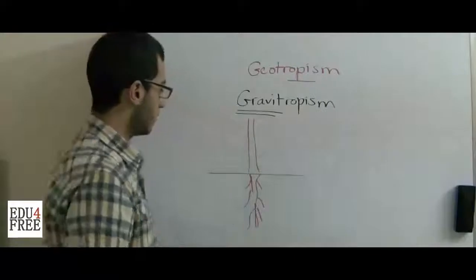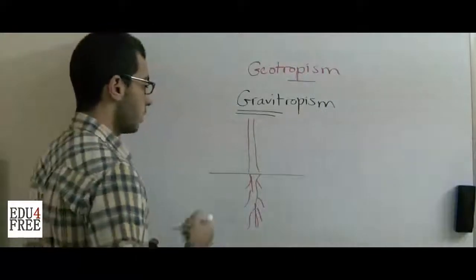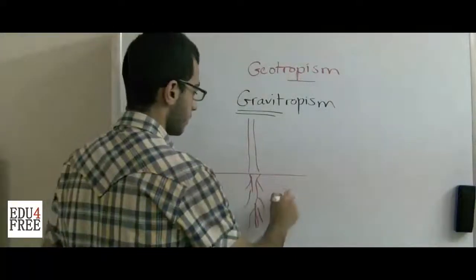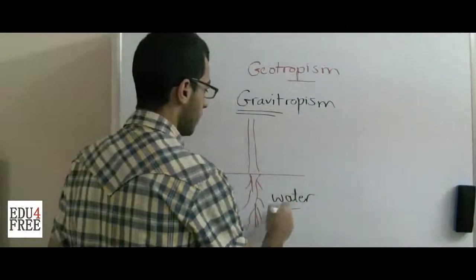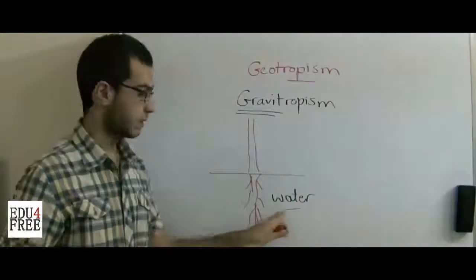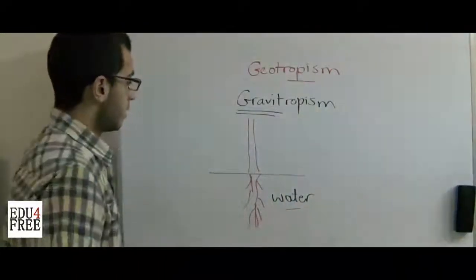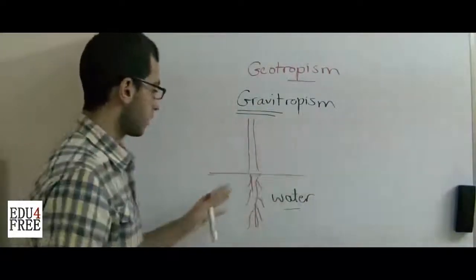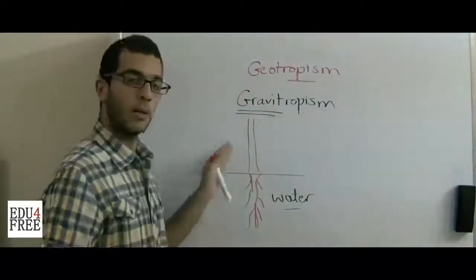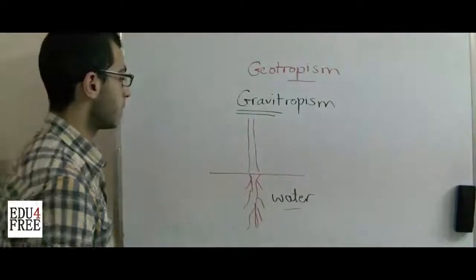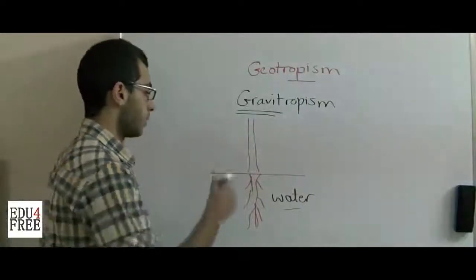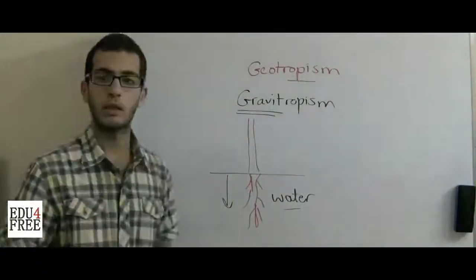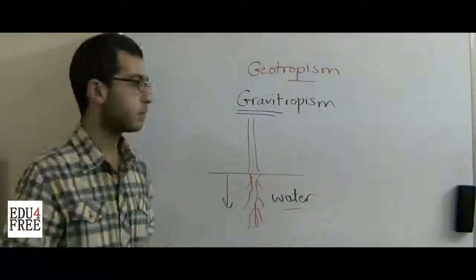People said that the roots go downwards in search of water. But here a question is asked: if the water were directed upwards, will the stem grow upwards, or will it still grow downwards? The answer is it will grow downwards.